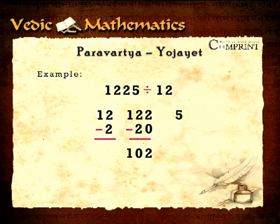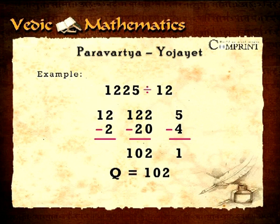Urdhva Tiryagbhyam is a general formula applicable to all cases of multiplication and also in the division of a large number by another large number. It means vertically and crosswise. Using vertically and crosswise, you do not need to do the multiplication tables beyond five multiplied by five.